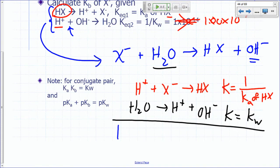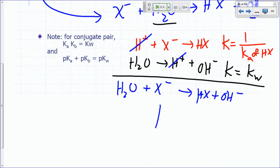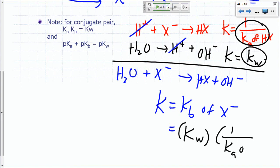So if you add these two, what do you get? Overall reaction is H plus cancels out. So you have H2O plus X minus, which is what you want on the left, right? Yields HX plus hydroxide on the right. So what's the equilibrium constant for this? Equilibrium constant for this is called the KB of X minus, and that's equal to what? The product of this and that, right? So it's KW times 1 over KA of HX.